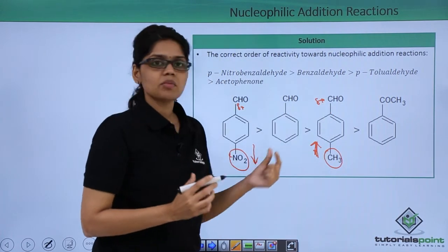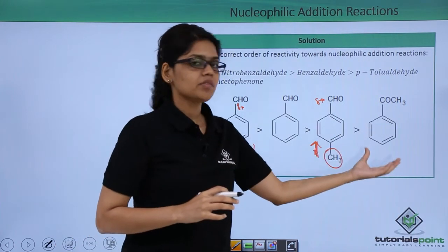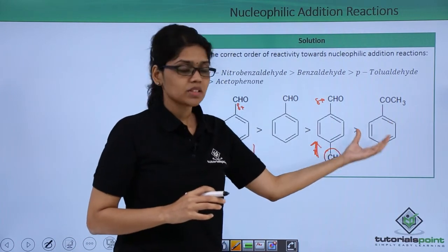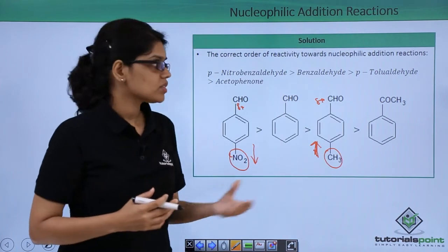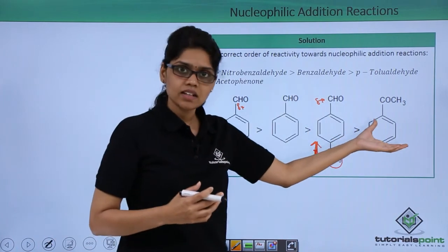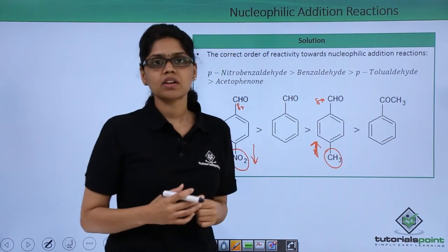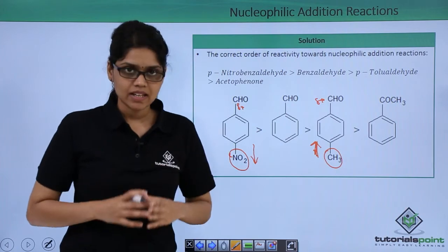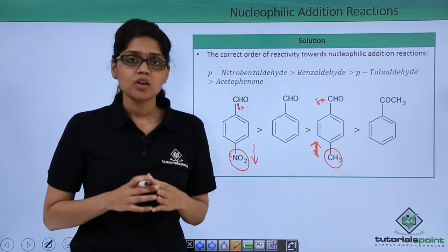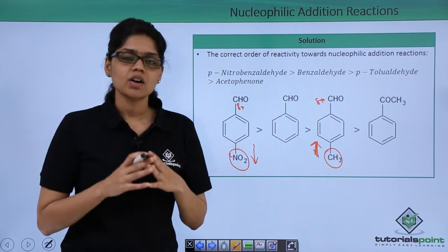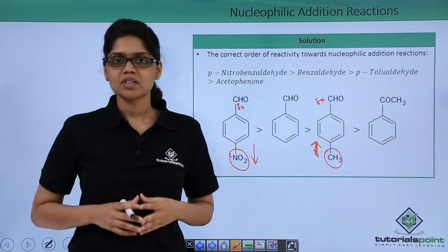Benzaldehyde has a lower delta positive charge than paranitrobenzaldehyde because the CH3 group in para-tolualdehyde is electron donating in nature, so the delta plus decreases. Finally, acetophenone as a ketone has the least reactivity because it is more sterically hindered and its delta plus of the carbonyl carbon is very low compared to these aldehydes. I hope you are very clear on how we arrived at this particular solution. Thank you.